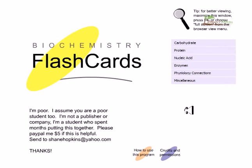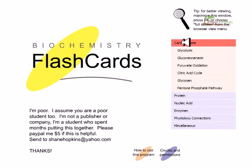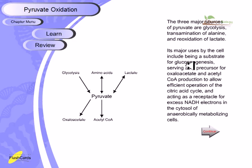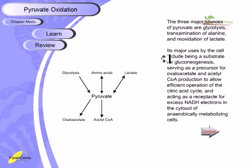Welcome back. In this video we'll be talking about carbohydrate metabolism, specifically pyruvate oxidation. The three major sources of pyruvate are glycolysis, transamination of alanine, and the reoxidation of lactate.